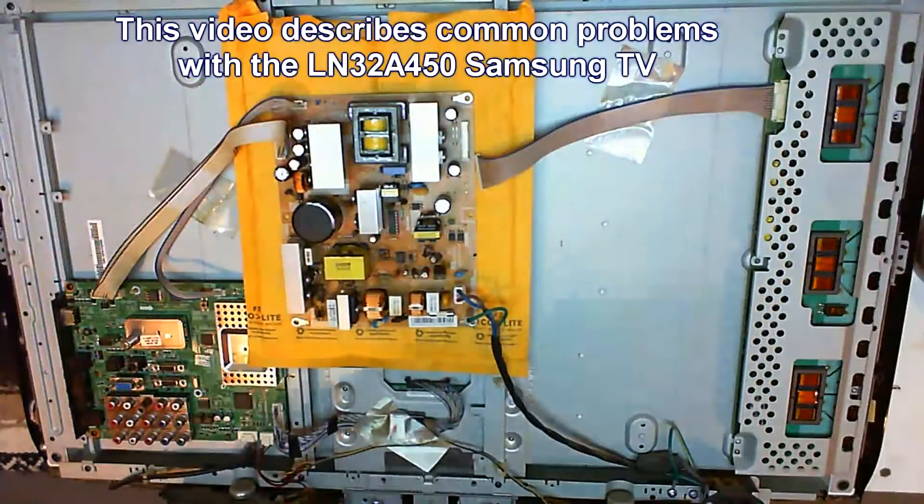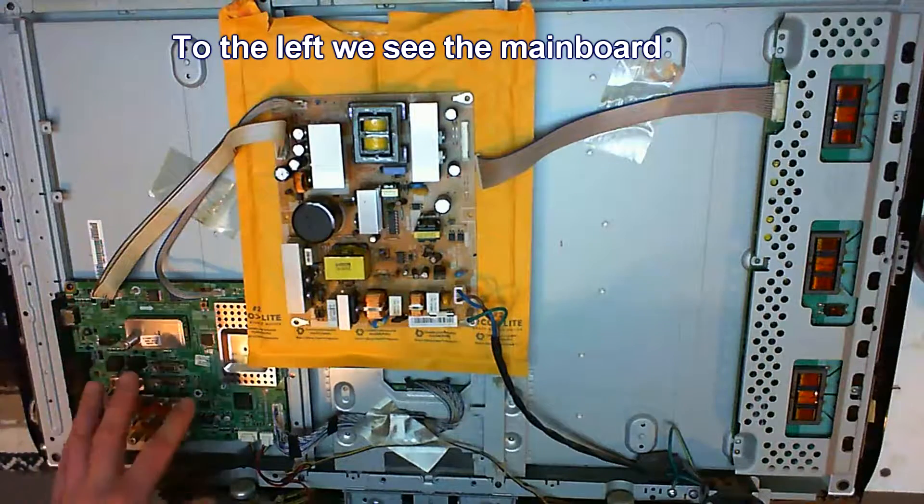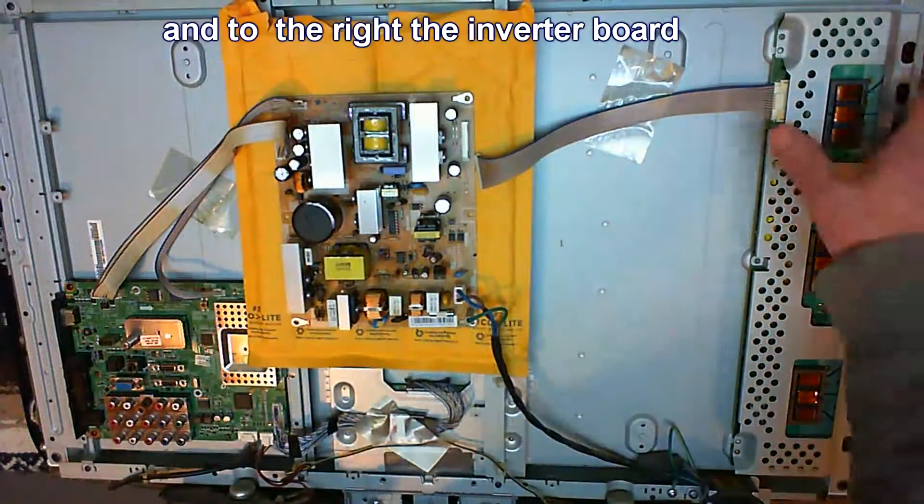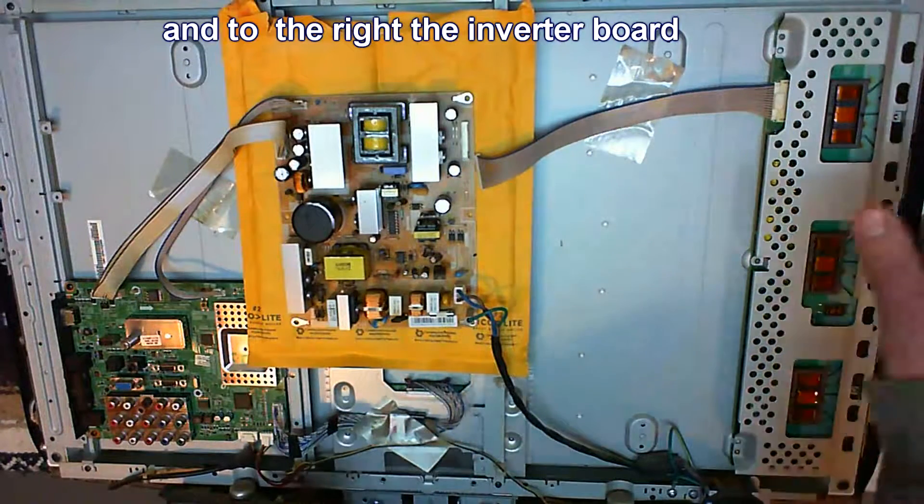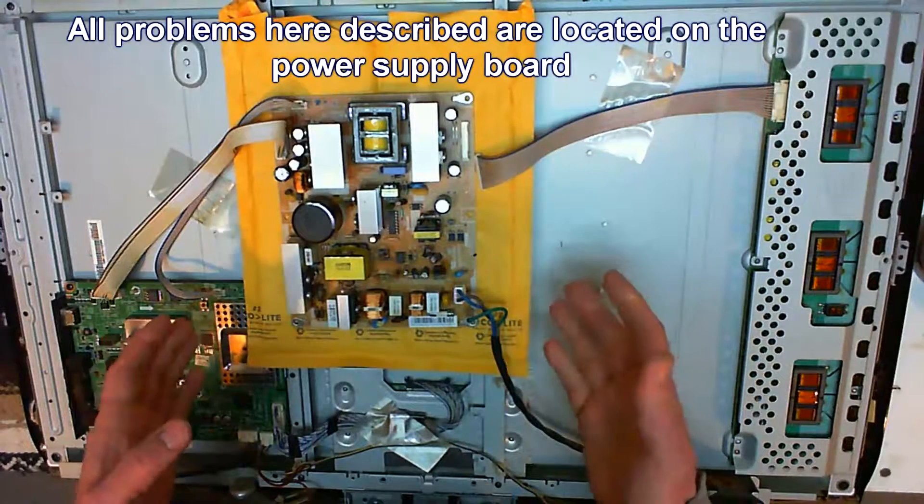This is the LN32A450 Samsung TV, which has several problems on the power supply. We see the main board to the left, the power supply board in the middle and the high voltage inverter board on the right side.